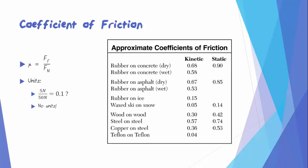You can find the coefficients of friction for various pairs of materials by looking at your reference table. You'll see that there are two types of coefficients of friction, kinetic and static.